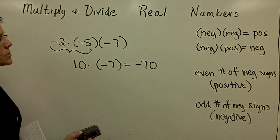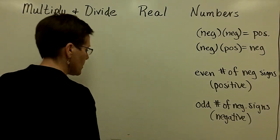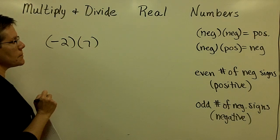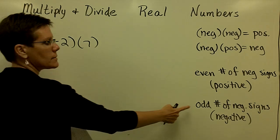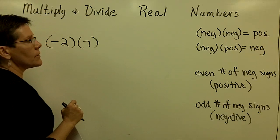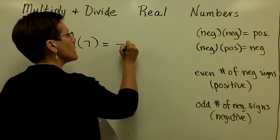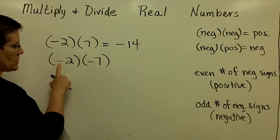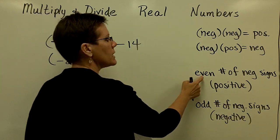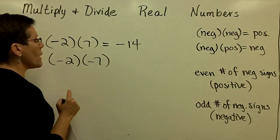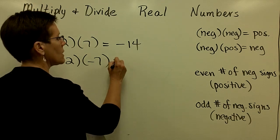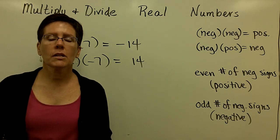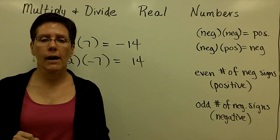Let's go back and look at just two factors. Negative 2 times positive 7 has one negative sign — an odd number — so it gives a negative answer, confirming that a negative times a positive is a negative. If you have an even number of negative signs, two of them, your answer is positive — as we know, a negative times a negative is a positive. I'm going to pause, and then we're going to look at division and compare it to multiplication and see why it follows the same rules.